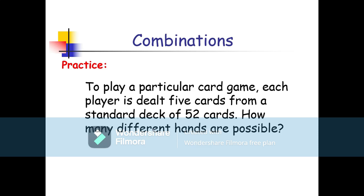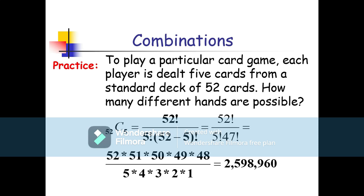To play a particular card game, each player is dealt five cards from a standard deck of 52 cards. How many different hands are possible? We select 5 cards from 52, so we use 52C5 = 52! / (5! × (52−5)!) = 52! / (5! × 47!). We expand the 47! so that the denominator cancels, and multiply the remaining values to get the answer.